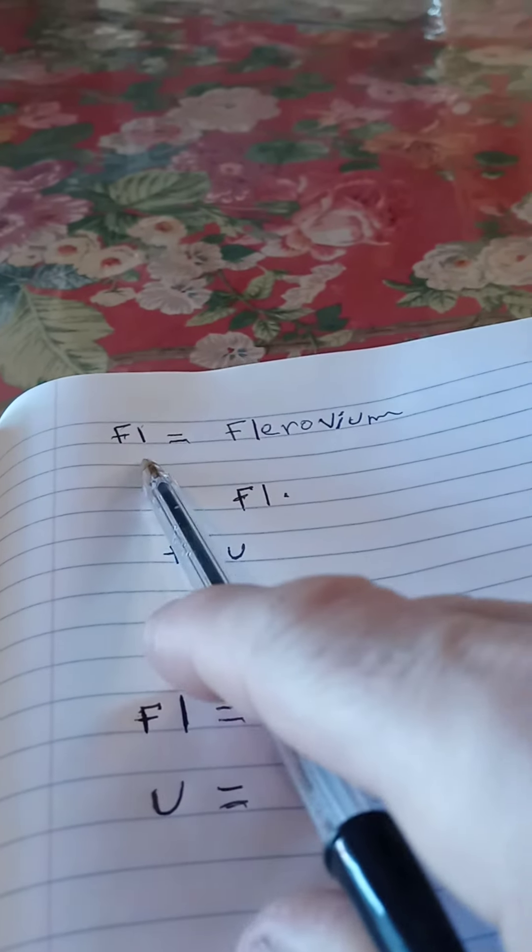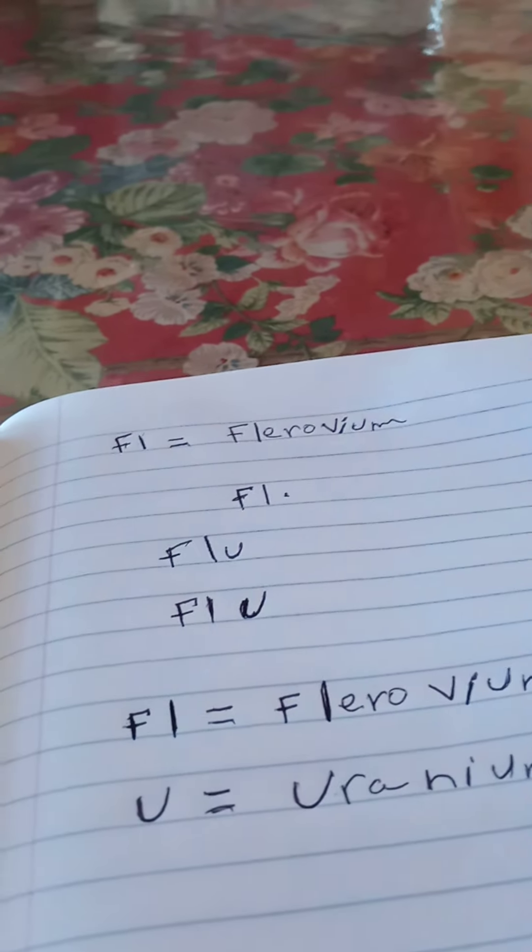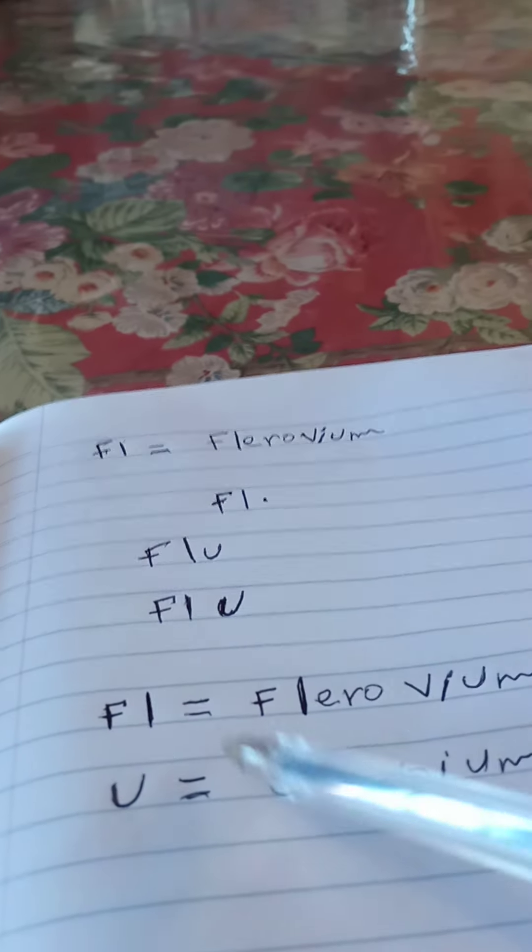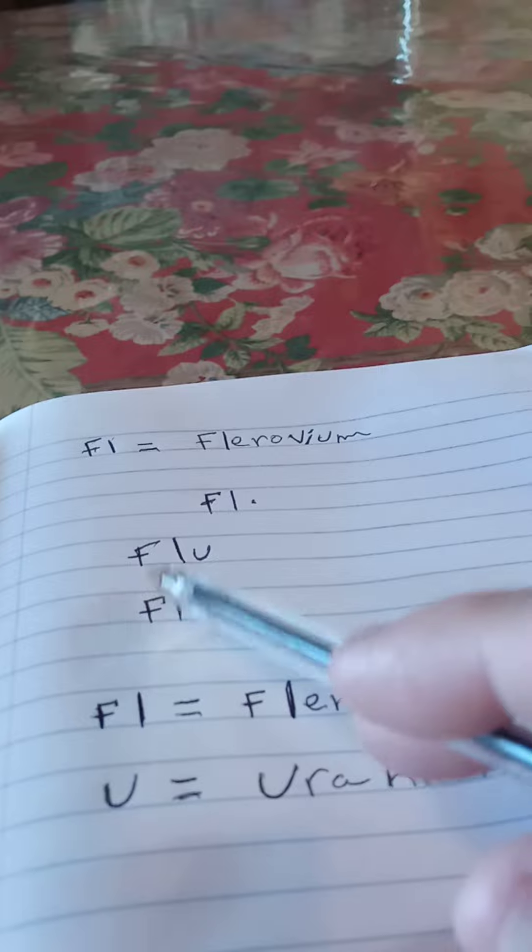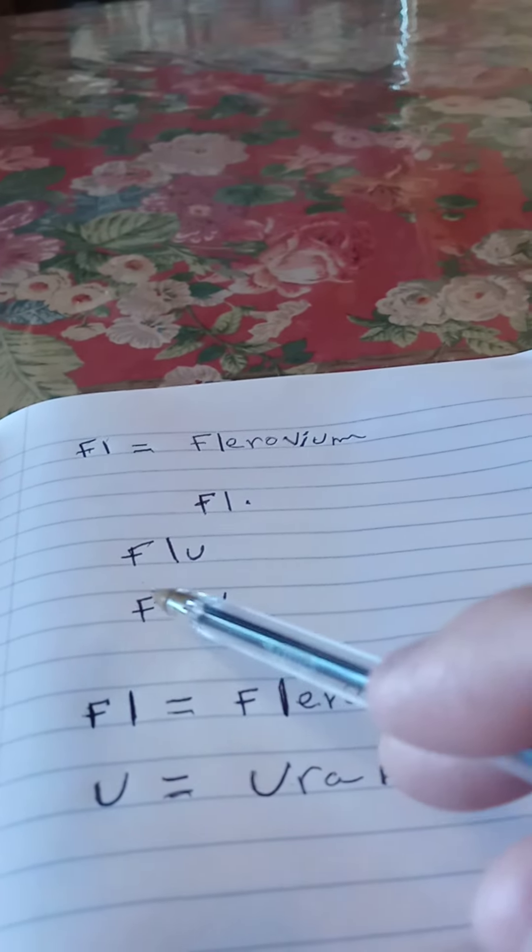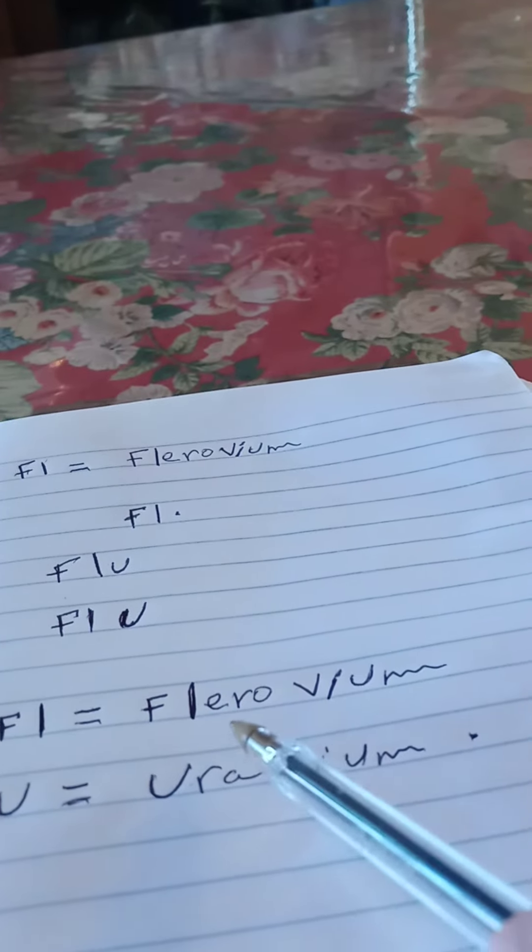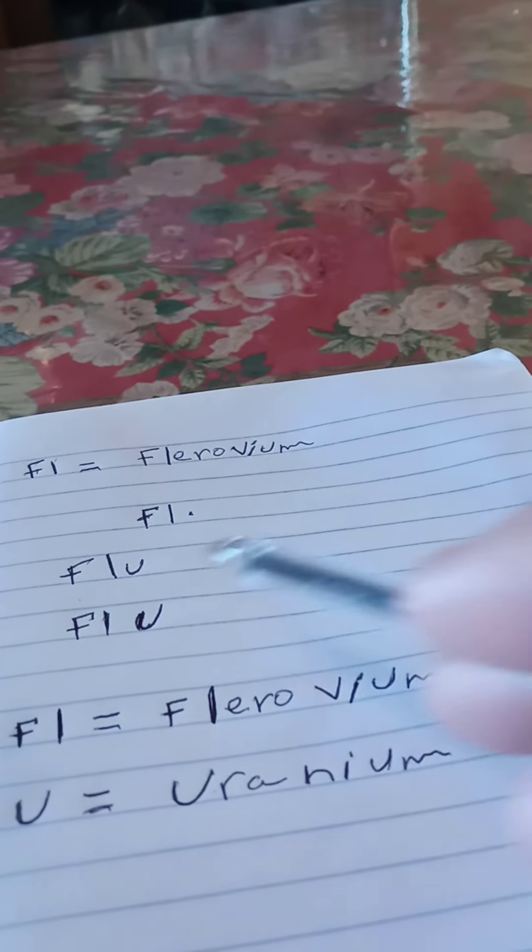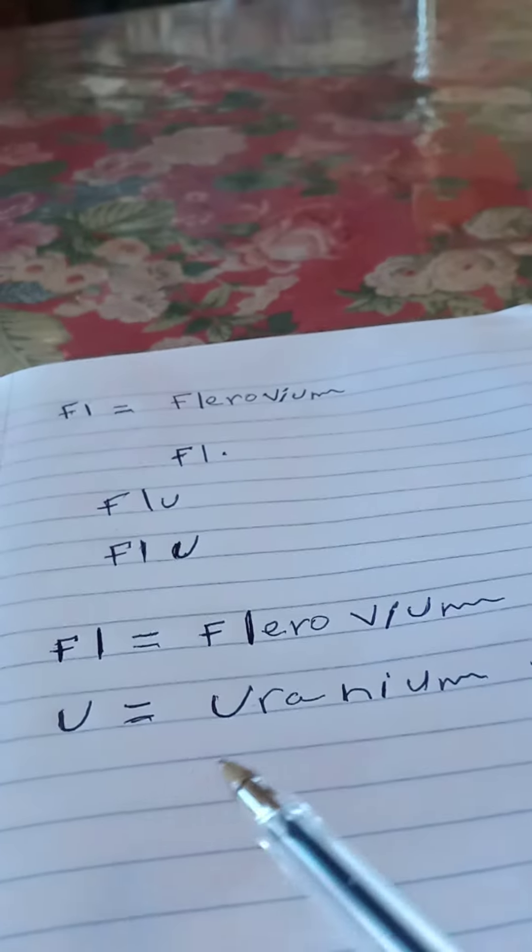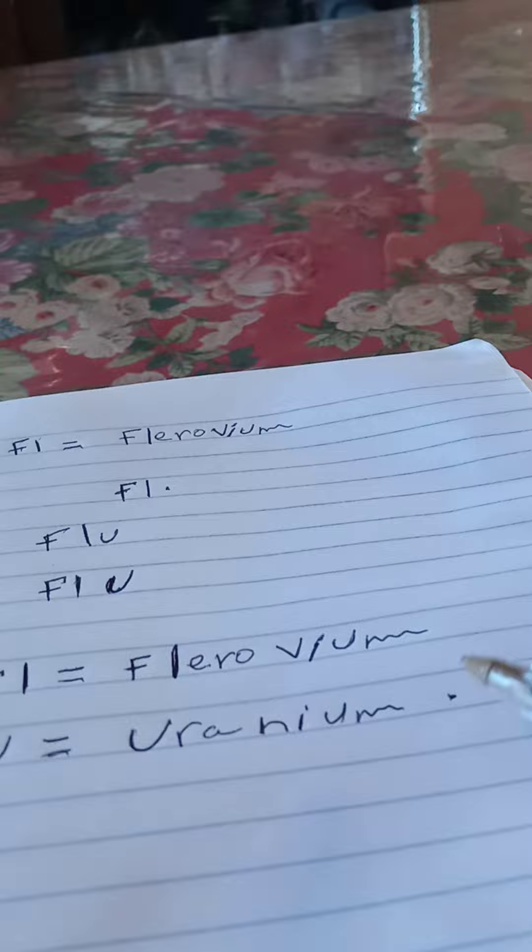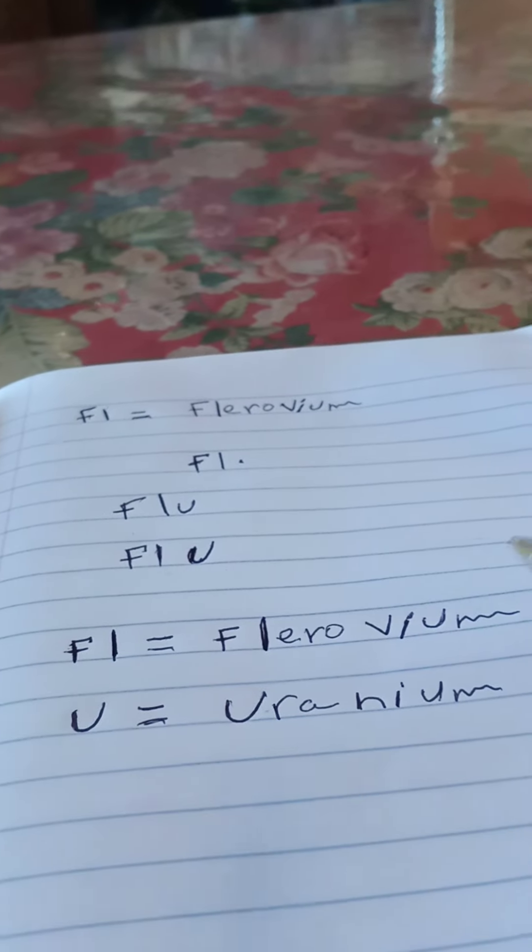F-L for Fluorovium can also be the F-L for the word flu (F-L-U). We know that F-L is for Fluorovium (F-L-E-R-O-V-I-U-M) and capital U is for Uranium (U-R-A-N-I-U-M). So the word flu...